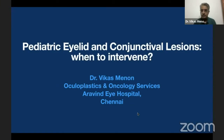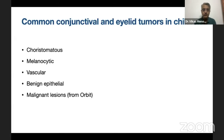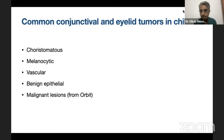Thank you for including me in your course. Dr. Seema has shown a lot of very interesting orbital cases and in some of my slides you may see some overlap between entities. My area is pediatric eyelid and conjunctival lesions. Briefly I will mention about when to intervene in these conditions. In the coming few minutes, we are going to see some of these conditions — the most common conjunctival and eyelid tumors in children, like choristomatous lesions, melanocytic lesions, vascular lesions, benign epithelial lesions, and some of the malignant lesions. Mostly malignant lesions which appear in eyelid and conjunctiva are actually primarily coming from the orbit.